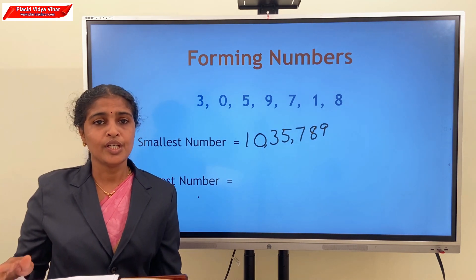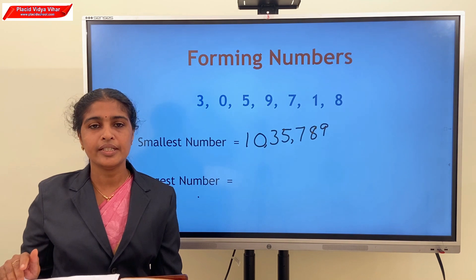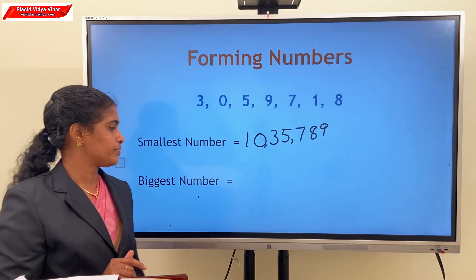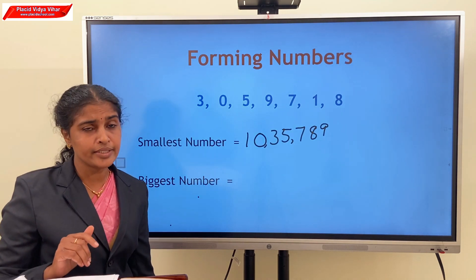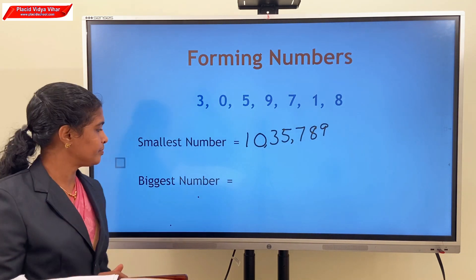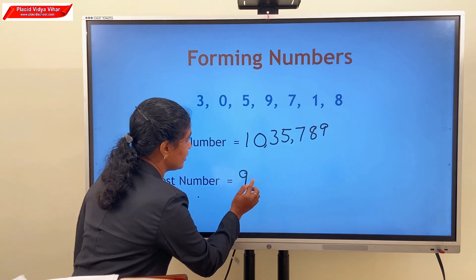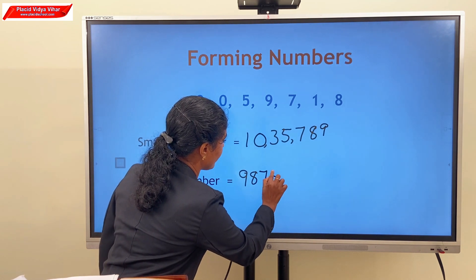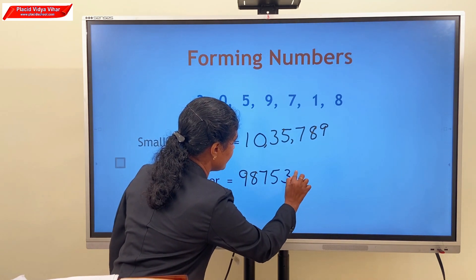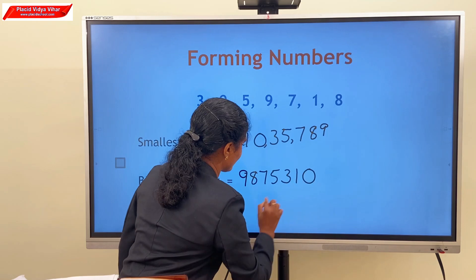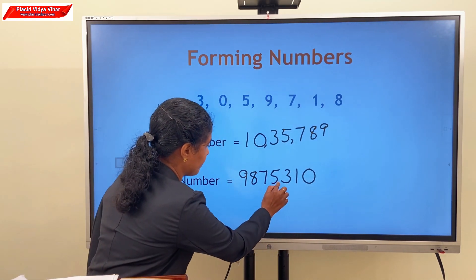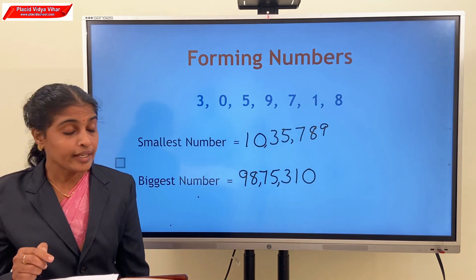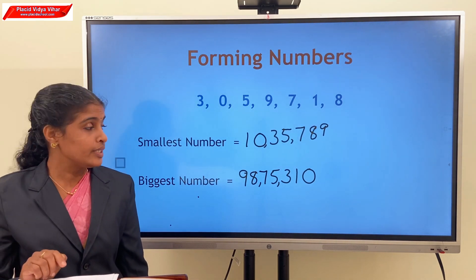The biggest number is formed by arranging the digits in descending order, that is, greatest to smallest. Among these, the greatest digit is 9: 9, 8, 7, 5, 3, 1, 0. So our answer is 98,75,310.